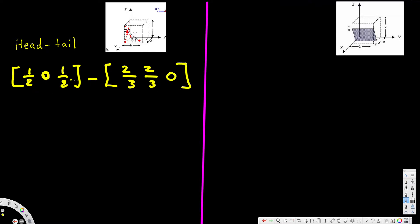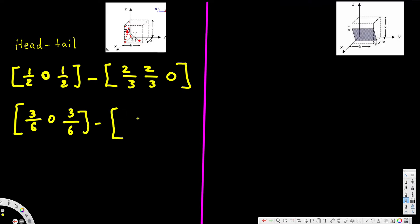Now we have to subtract. It's better to have the same denominator. The common denominator for 2 and 3 is 6. So we get 3/6, 0, 3/6 minus 4/6, 4/6, 0. Subtracting: 3 minus 4 gives negative 1/6, then 0 minus 4/6 gives negative 4/6, and 3/6 minus 0 gives 3/6.